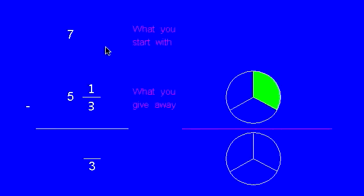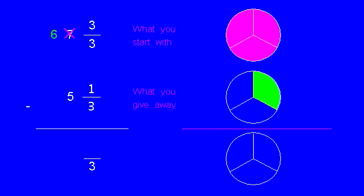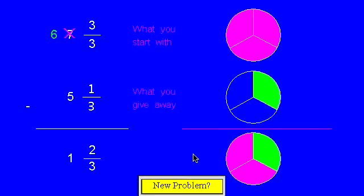What if you don't have any pieces at all to give away? Here we have none, and we need to give a third of a whole away. We can still convert a whole into pieces, so we take one of those wholes, leaving six, and since we need thirds, we break it up into three thirds. So now we have three pieces to give one away, we have two left. And now we have six wholes, give five away, we have one left.